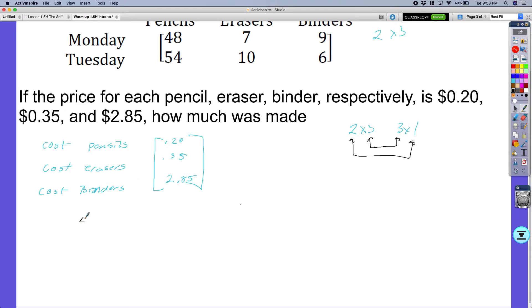So let's go ahead now and solve this then. I'm going to have my 48, 7, and 9 for Monday. And then on Tuesday I'm going to have my 54, 10, and 6. And I'm just going to multiply that by this matrix right here. I'm just going to slide it down.